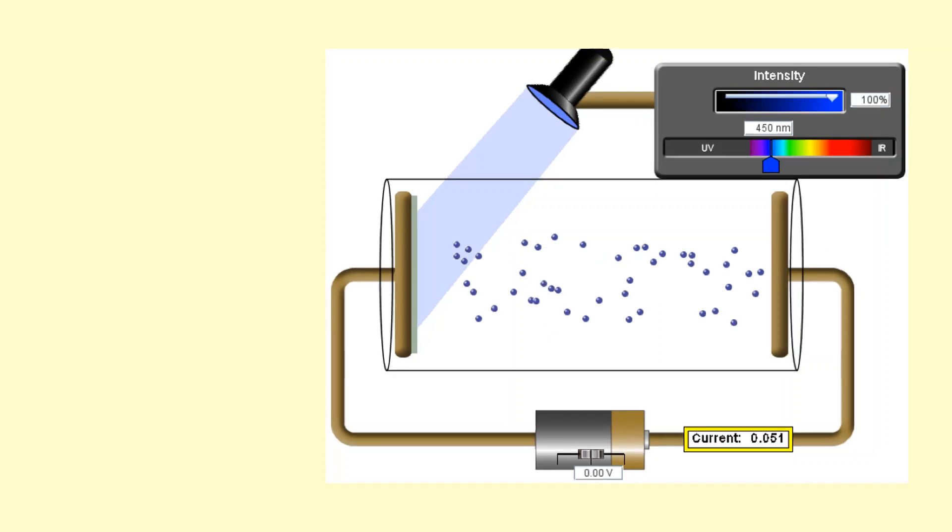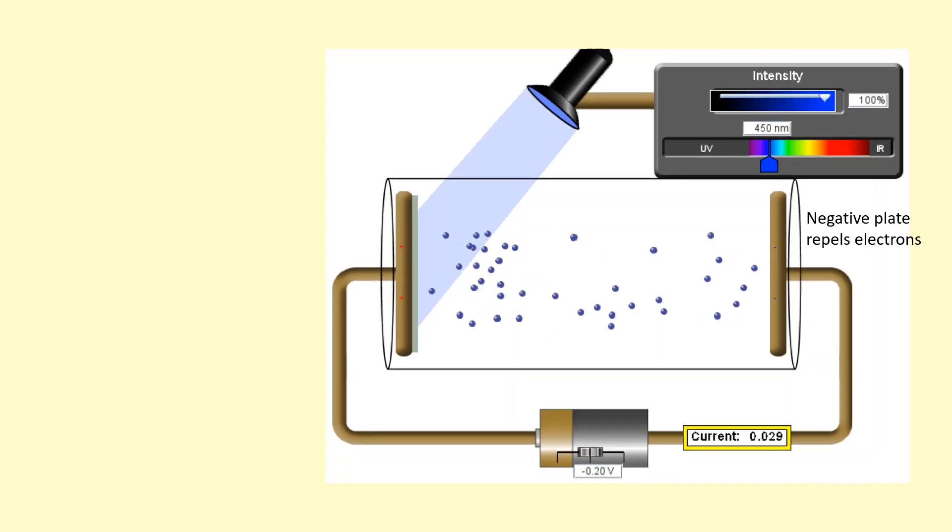Okay, now what I'm going to do is connect the battery the other way around, making this plate negative. Now the electrons are getting repelled. And the slow electrons, the ones that leave with a low amount of kinetic energy, are going to get stopped. And they're not going to reach the other end. So the current has decreased.